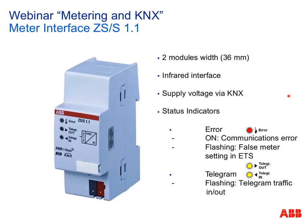The ZSS has three LEDs. The error LED, when constantly lit, means no IR communication between meter and interface — perhaps they're not directly adjacent or there's dirt blocking the optical path. When the error LED is flashing, it indicates wrong meter settings in ETS parameterization. Two other LEDs blink whenever there is communication between the components.